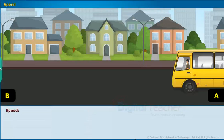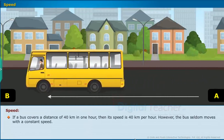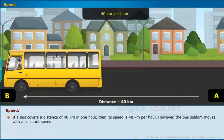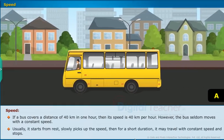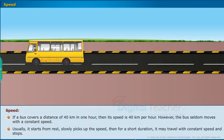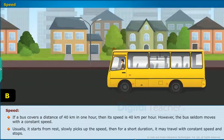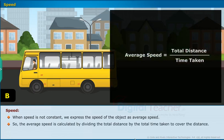Now, let us know about speed. If a bus covers a distance of 40 km in one hour, then its speed is 40 km per hour. However, the bus seldom moves with a constant speed. Usually, it starts from rest, slowly picks up the speed, then for a short duration it may travel with constant speed and stops. When speed is not constant, we express the speed of the object as average speed. So, the average speed is calculated by dividing the total distance by the total time taken to cover the distance.